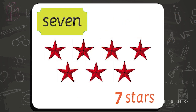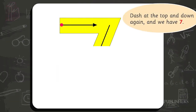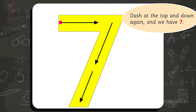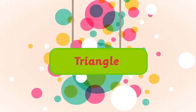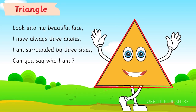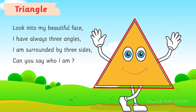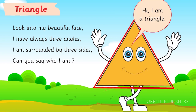Seven — seven stars. Dash at the top and down again, and we have seven. Triangle. Look into my beautiful face. I have always three angles. I am surrounded by three sides. Can you say who I am? Hi, I am a triangle.